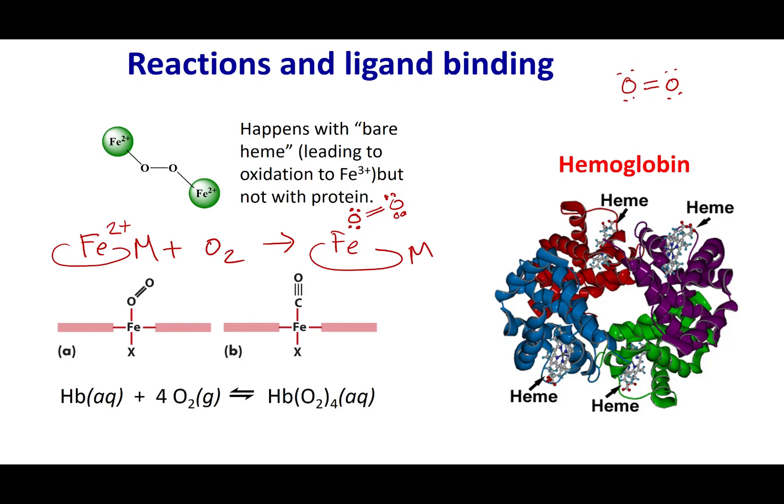Now myoglobin doesn't act by itself. What can happen is I can put four myoglobins together and we get the structure and you probably heard about this protein hemoglobin. Now hemoglobin has four of these myoglobins which have heme rings and each one of these heme rings with the iron inside the porphyrin can grab an oxygen.